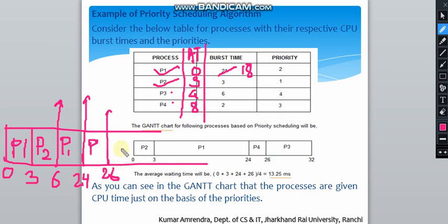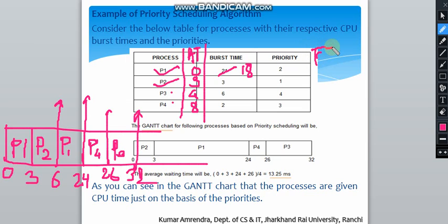After P4 completes at 26, P3 runs for its full burst time of 6, completing at 32. We now build the Gantt chart and record finish times: P1 finishes at 24, P2 finishes at 6, P3 finishes at 32, and P4 finishes at 26.